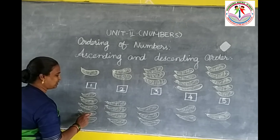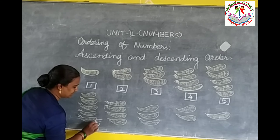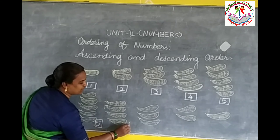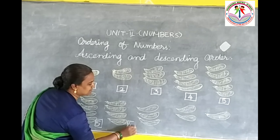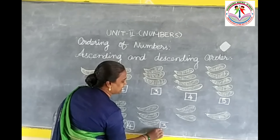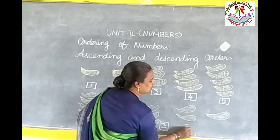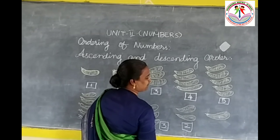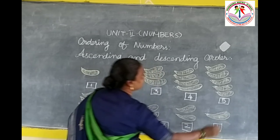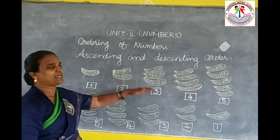If we arrange from small to bigger, we can arrange the numbers: one, two, three, four, five. Here five numbers. Here three numbers. Here two numbers. Here, only one.